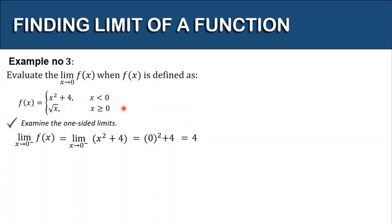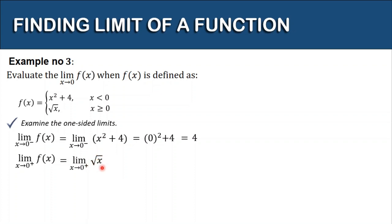For the other part of the piecewise function, when x is greater than or equal to 0, we have the limit of f of x as x approaches 0 from the right. This is the limit of the square root of x as x approaches 0, and by substitution we get the square root of 0, which equals 0.